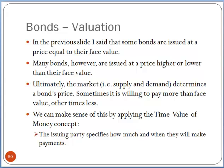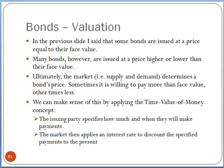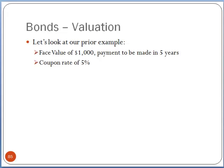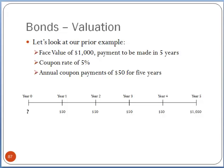The issuing party specifies how much and when they're going to make the payments. The market then applies an interest rate which discounts the specified payments to the present. Let's take a look at our prior example: face value of $1,000 to be made in five years, coupon rate of 5%, $50 annual payments. Here's our timeline — five years. Years one through four, $50 is being paid out. In year five, there's another $50 plus the $1,000 face value. Our question is: how much is this worth today? What's a buyer willing to pay to receive $50 next year, and then $50 the year after, through year five, and then get their $1,000 back?